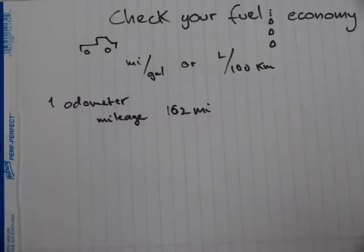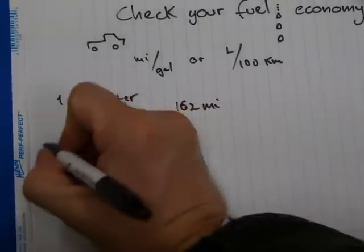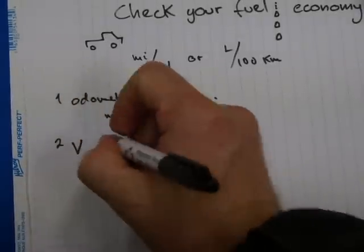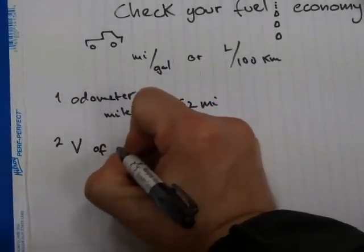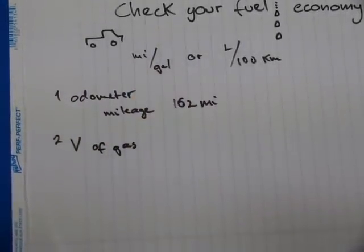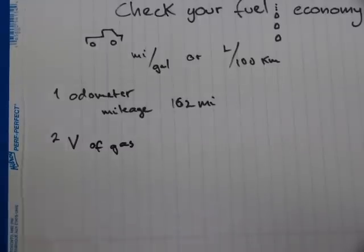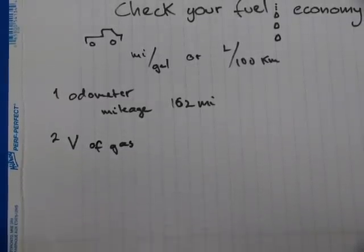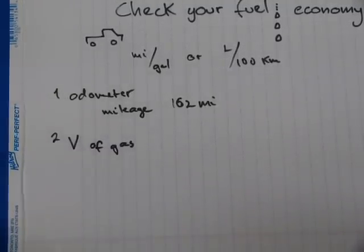The second piece of information that you need is the volume or amount of gas that your vehicle consumed over the same 162 mile distance. To do that, it is probably the best thing to do is to go from full tank to full tank again.